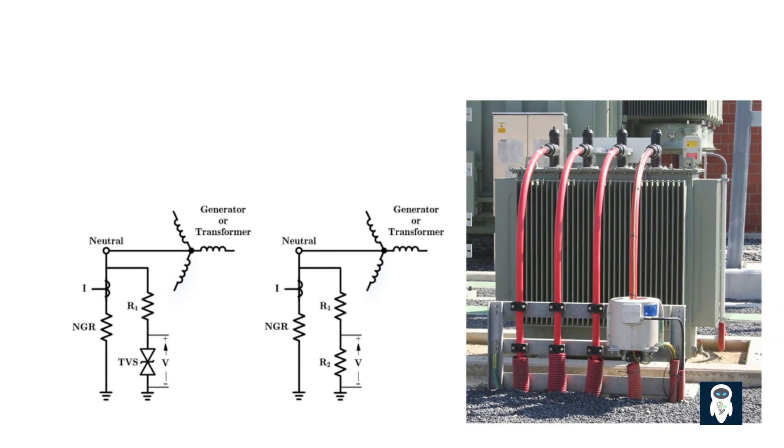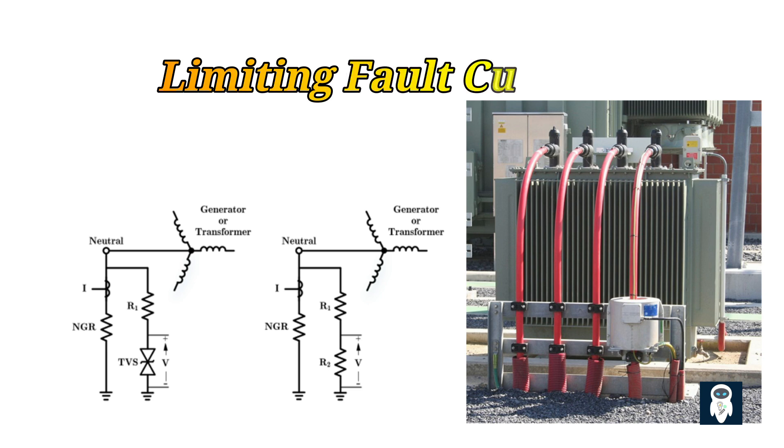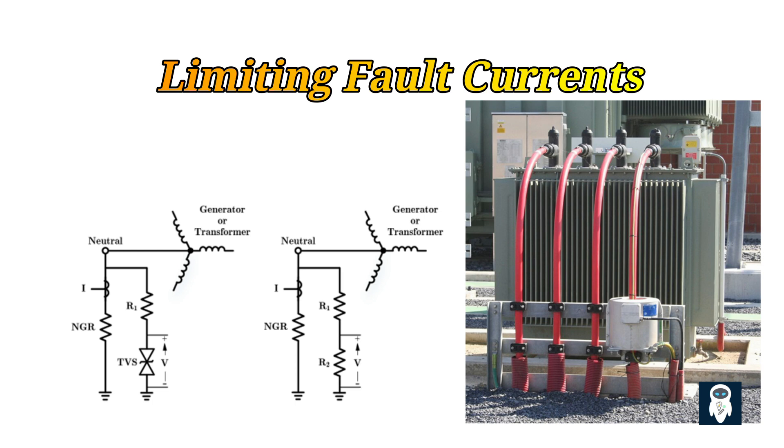The primary purpose of a neutral grounding resistor is to limit the fault current already present in a single line to ground fault. That is why neutral grounding resistors are mostly employed in low and medium voltage (LV and MV) distribution networks to ensure generators and transformers remain protected from damaging currents in the event of an earth fault.